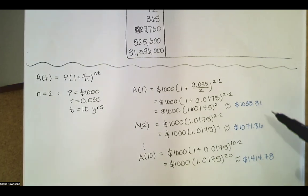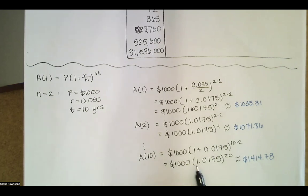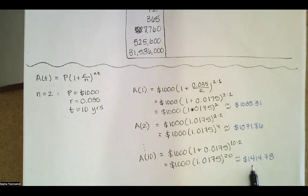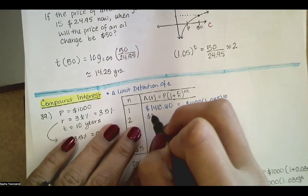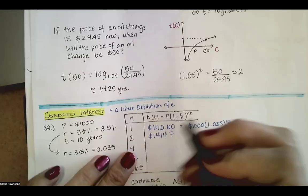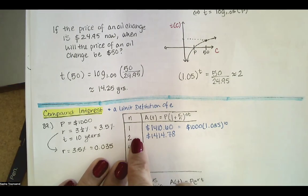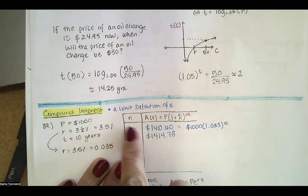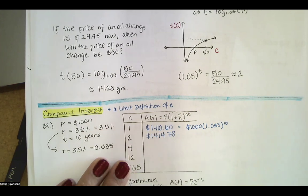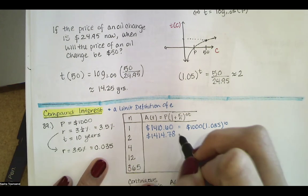After typing that into the calculator, we got one thousand four hundred fourteen dollars and seventy-eight cents — the balance after ten years compounding twice per year. That's just a little more than compounding once per year. Instead of adding 3.5 percent at year's end, we added 1.75 percent at six months and again at twelve months, and the number in the exponent is the total times interest was compounded.